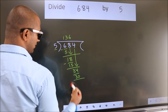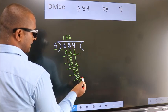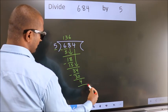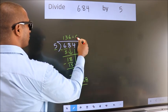Now we subtract. We get 4. No more numbers to bring it down. So we stop here. This is our remainder. This is our quotient.